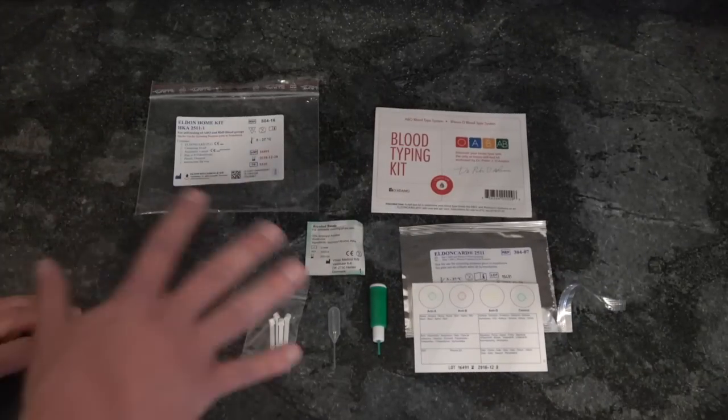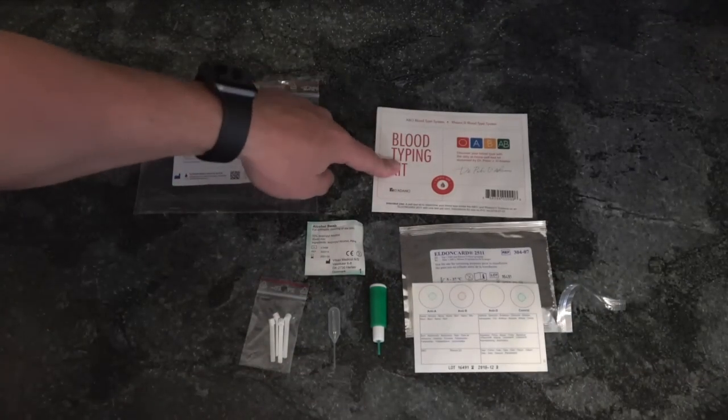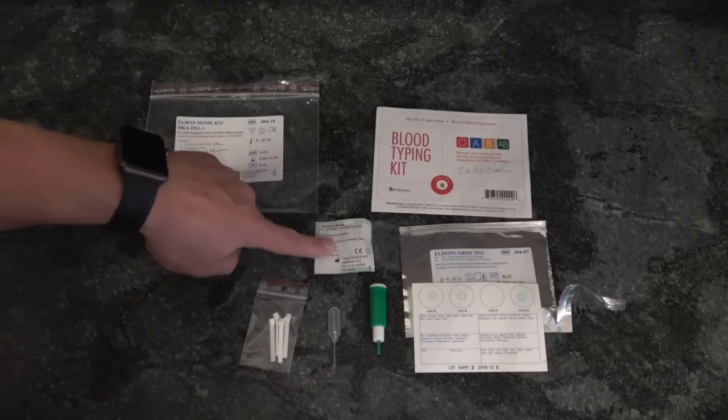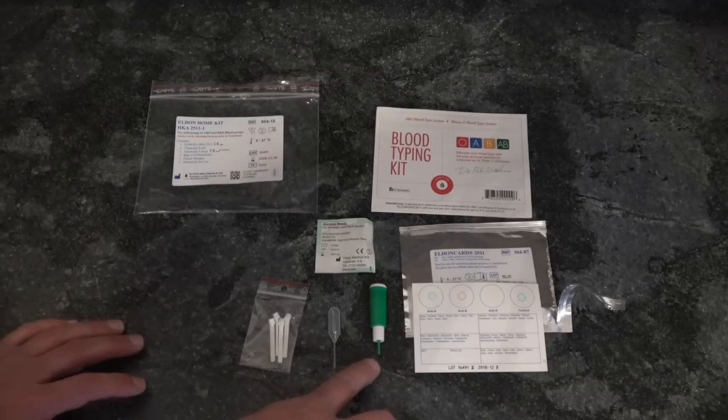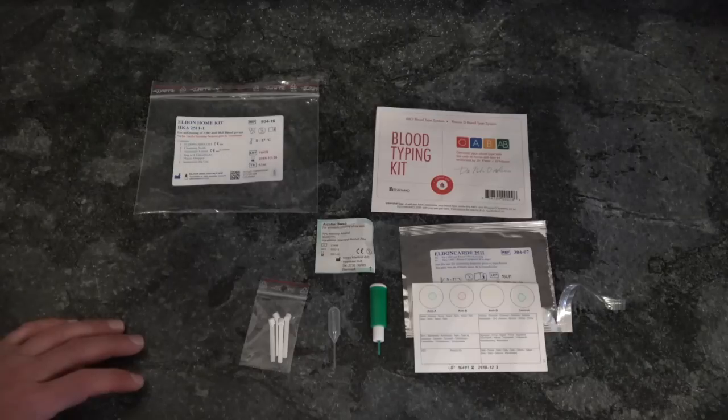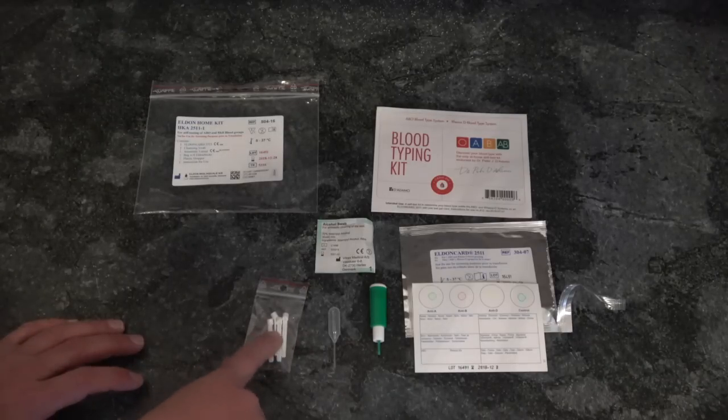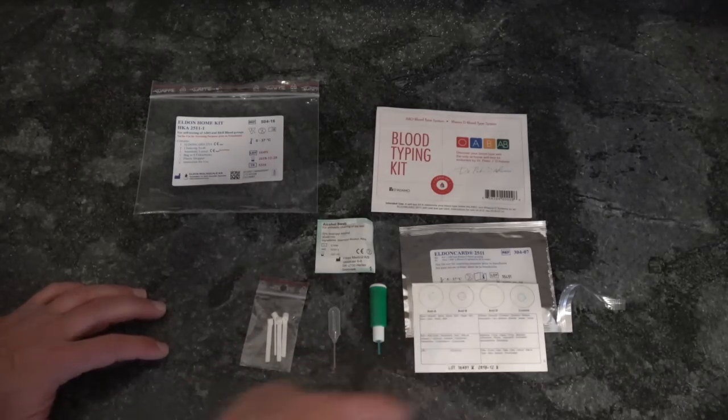This kit comes with everything that you need to get an accurate result in about ten to fifteen minutes. Your instruction guide, your test card, alcohol swab for your finger, lancet to poke your fingers so that you bleed, a pipette to prepare the Eldon card for testing, and four sticks to help collect the blood and apply it to each of those circles.